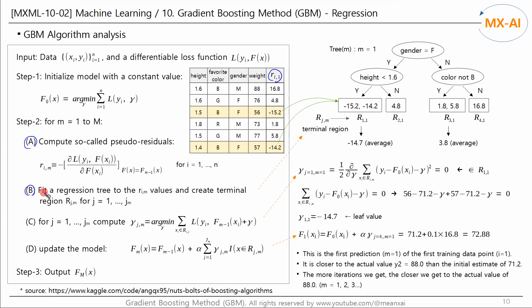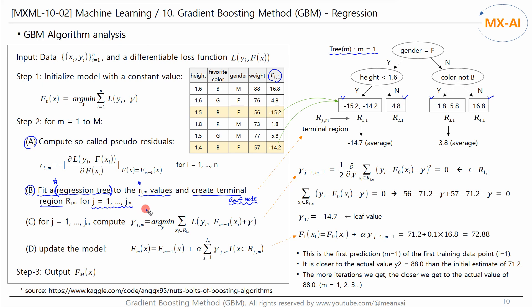In Step B, these residuals are used to create and train a regression tree. We use regression trees because we are training residuals that are real numbers. Regression trees should also be used in the GBM classification algorithm. Let's assume the generated tree is as follows — we create terminal regions in this tree. Terminal means leaf node, and this tree has four leaf nodes, where J is the leaf node number. The terminal region, capital R, is denoted with the first subscript J for the leaf node number and the second subscript M for the round number.